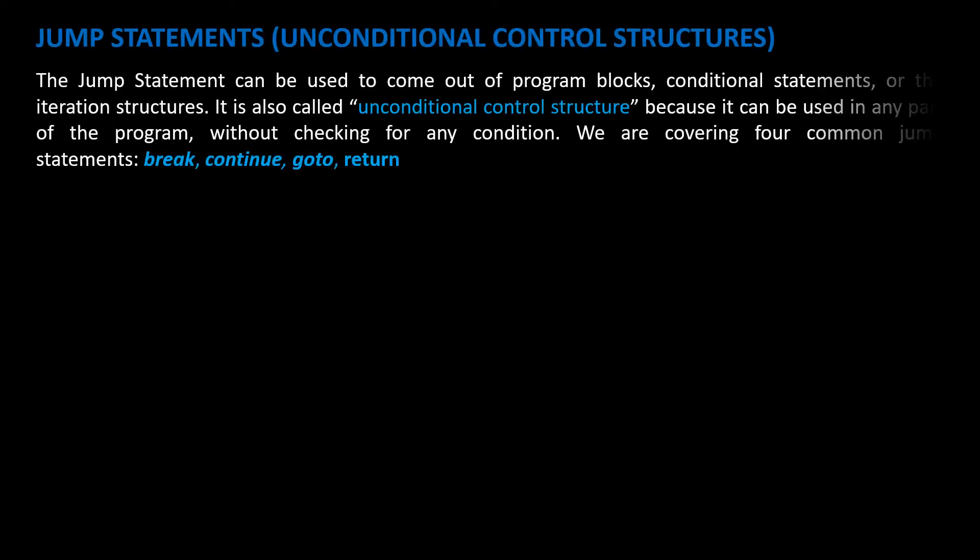The jump statement can be used to come out of program blocks, conditional statements, or the iteration structures. It is also called unconditional control structure because it can be used in any part of the program without checking for any condition. We are covering four common jump statements: break, continue, goto, and return.